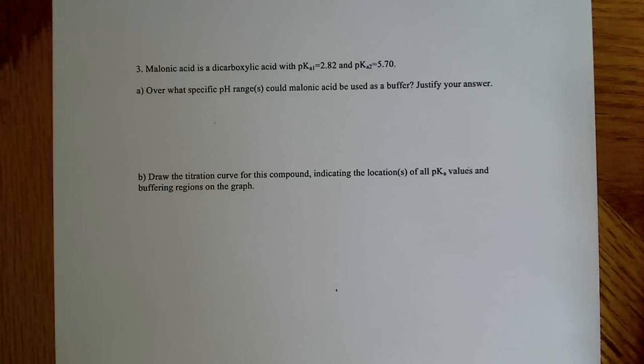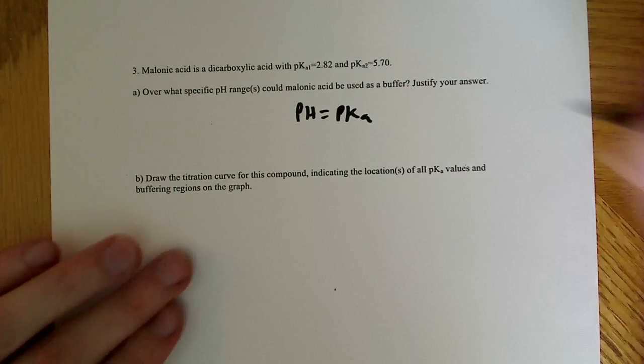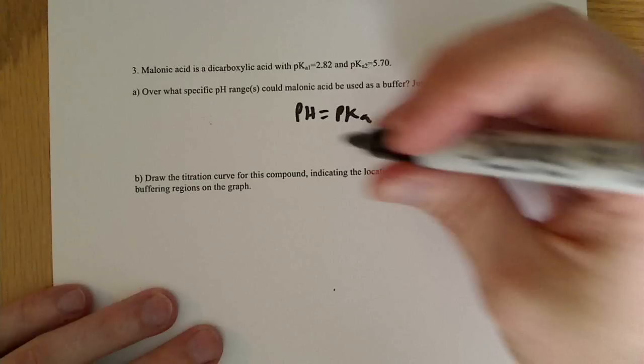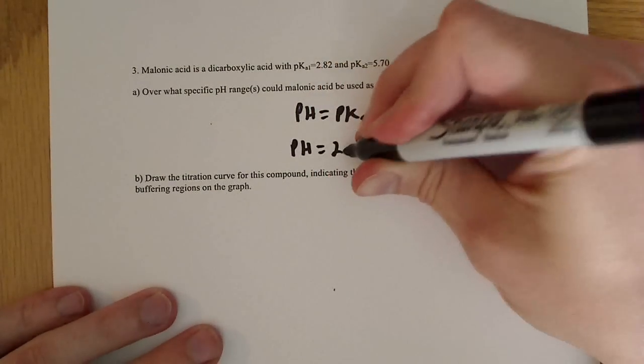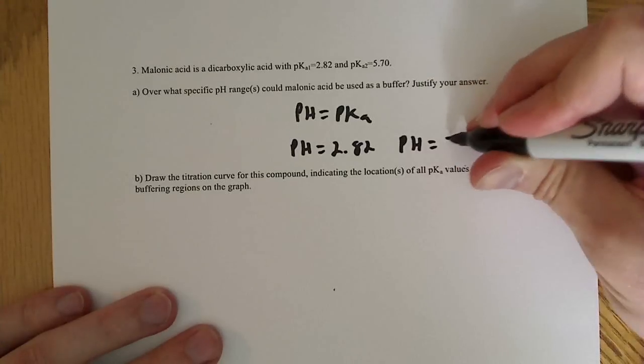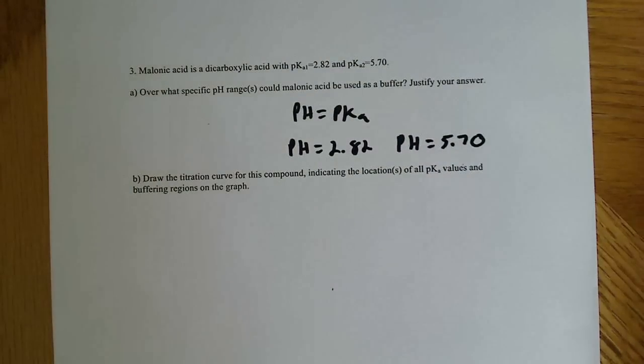We have two pKa values, and the thing to remember about where these are, where these would be good buffer, where maximum buffering ability will be, the maximum buffering ability will be when the pH is equal to the pKa. So the best places for this to buffer would be when the pH is equal to 2.82 and when the pH is equal to 5.70. Those would be the two cases where it would have maximum buffering capacity.